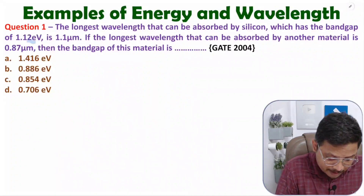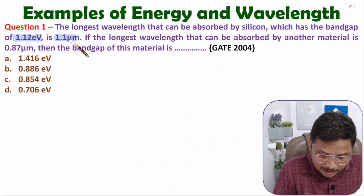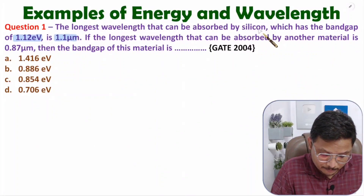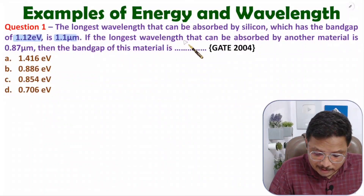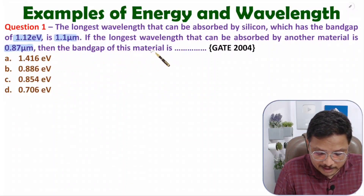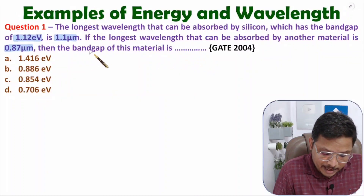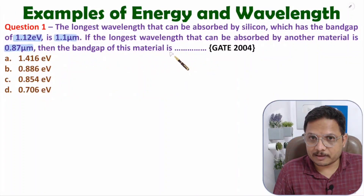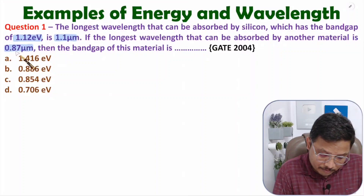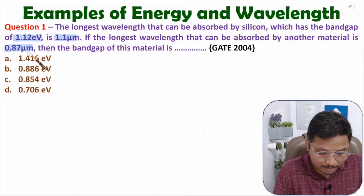Here we are given that the band gap is 1.1 electron volt and 1.1 micrometer is the wavelength of silicon. If the longest wavelength that can be absorbed by another material is 0.87 micrometer, then the band gap of this material is how much? Here we are dealing with finding the band gap of another material, and for that we are given the longest wavelength that is 0.87 micrometer.